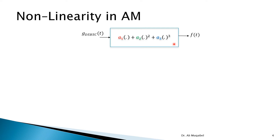We are going to test this. Someone might ask why we take a signal through non-linearity — this is an unintentional non-linearity which exists in the channel, so it's there by default. The input is m(t) times cosine, which is the double sideband suppressed carrier definition.